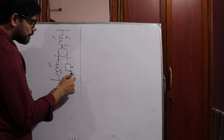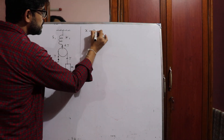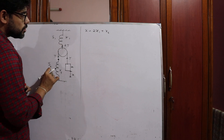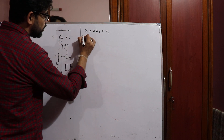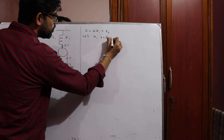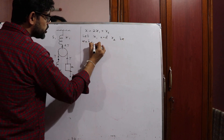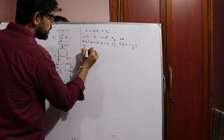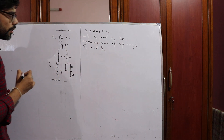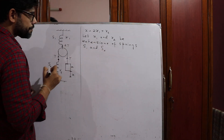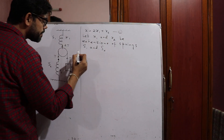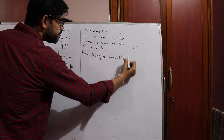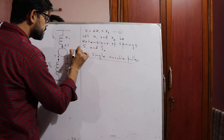The displacement of the block x can be written as x = 2x1 + x2, where x1 is the extension of spring S1 and x2 is the extension of spring S2. Let x1 and x2 be the extensions of springs S1 and S2 from the initial equilibrium position of the block. So x = 2x1 + x2.